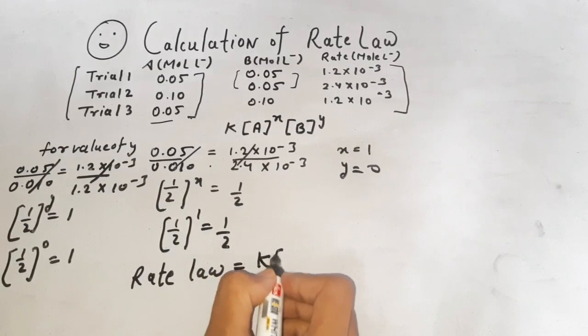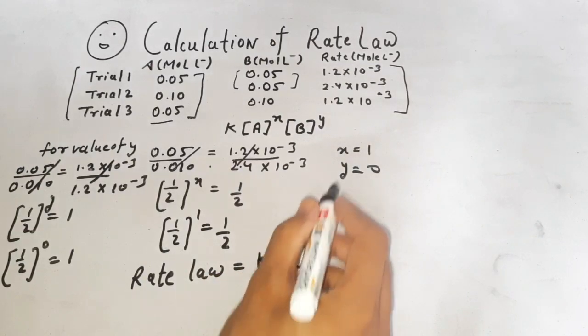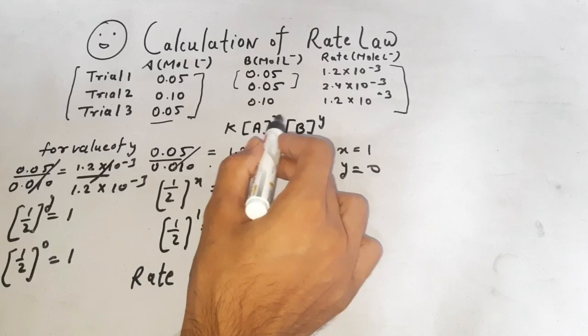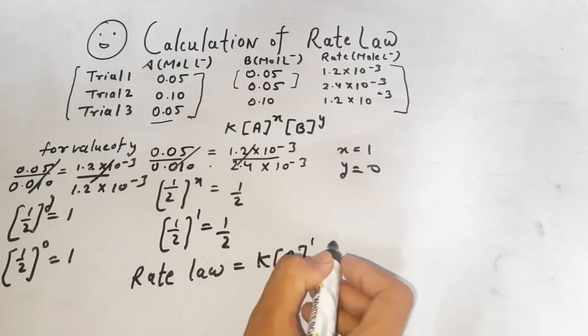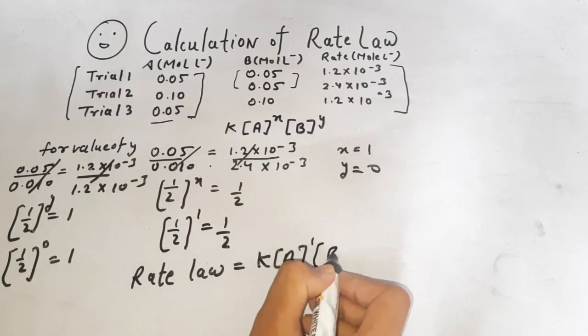k equals to [A]^1[B]^0. We put value of x equals to 1 and value of b equals to 0.